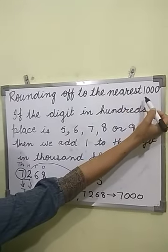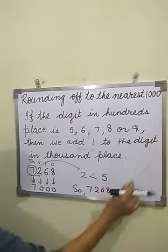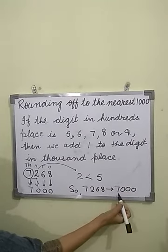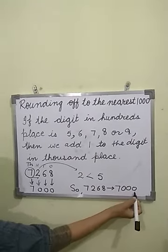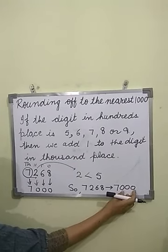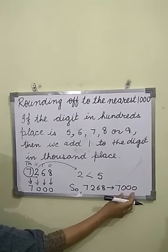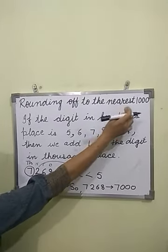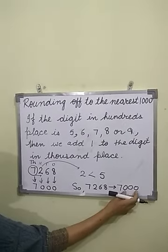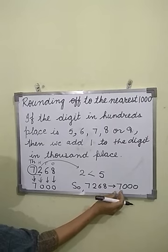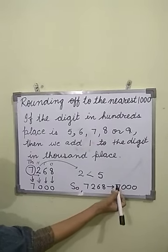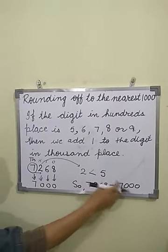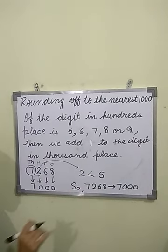In rounding off to the nearest 1000s, the answer is always a multiple of 1000. Here we see 7,000 — in the last 3 places we have 3 zeros. So in rounding to the nearest 1000, we will always get 3 zeros. The digit in the 1000s or 10,000s place will change according to the rule.